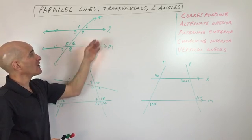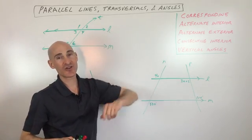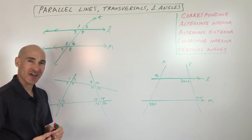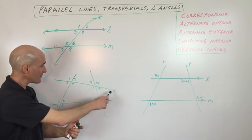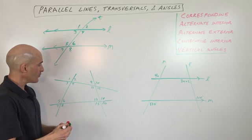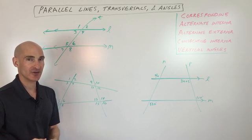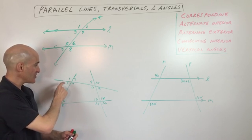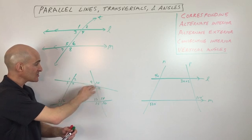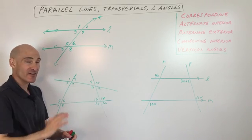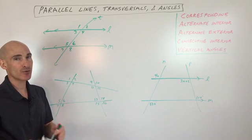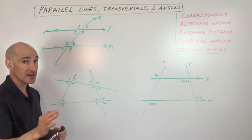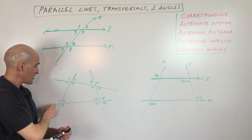You don't have to have two parallel lines cut by a transversal to use these angle names. In a diagram with four lines, we can still find corresponding angles. If you take this X and place it on top of this X, angle one matches angle five — but because these two lines are not parallel, angles one and five are not congruent. They're still called corresponding angles though. If lines are parallel, corresponding angles are congruent; if not parallel, they're not congruent — but they're still called corresponding angles. Similarly, two and six, three and seven, four and eight are corresponding pairs.